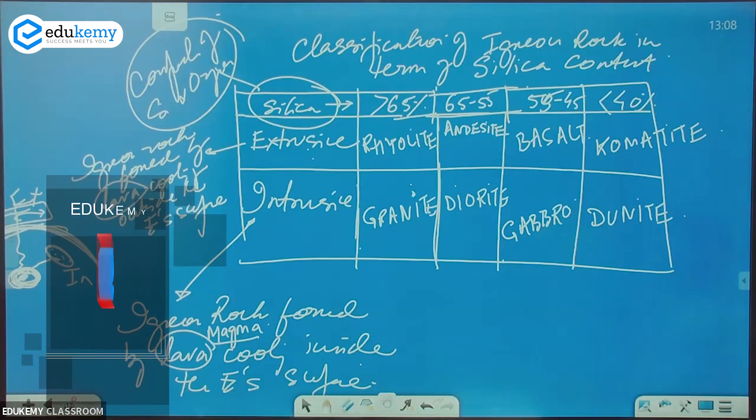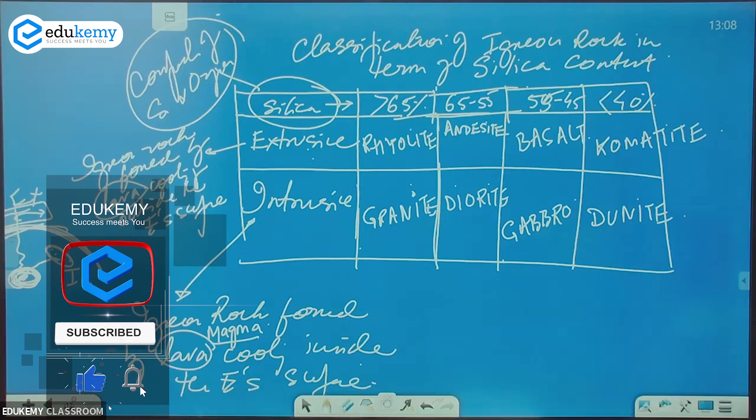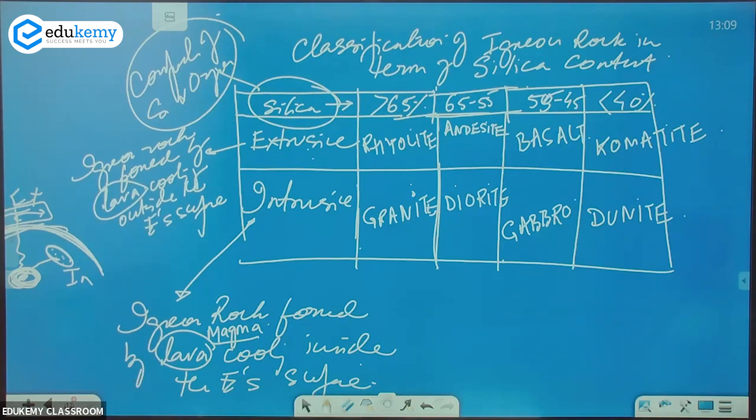Rhyolite, granite, andesite, diorite, basalt, gabbro (G-A-B-B-R-O), comatite, and dunite.